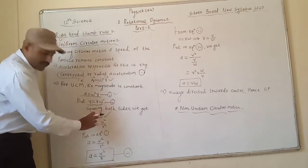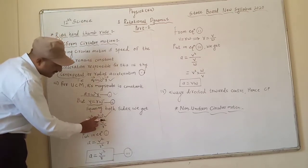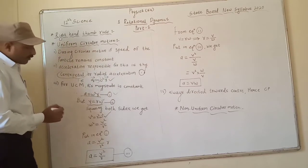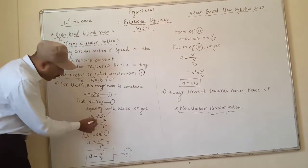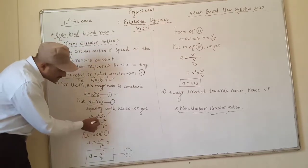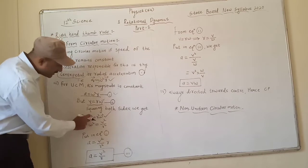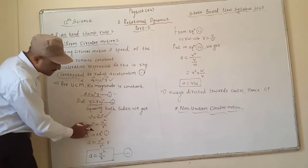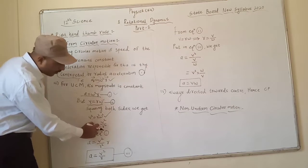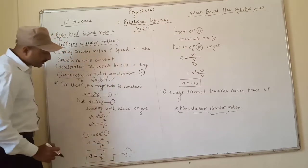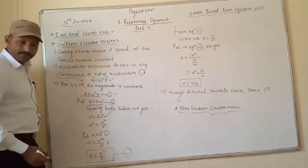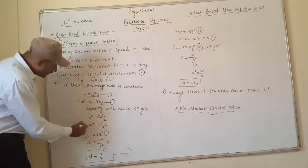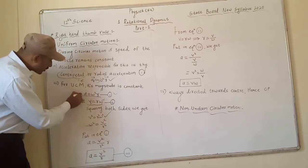From that, isolating the single term, we get the value of ω². Since R² is a multiplying factor, it moves to the other side as a divisor. Hence we get ω² = v²/R². We then substitute this value of ω² into equation number one.